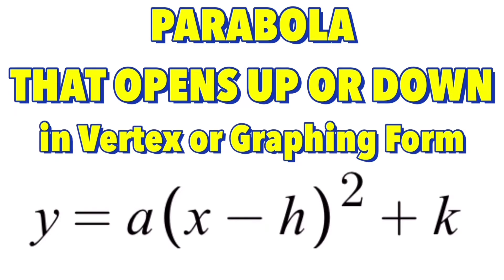We remember that the vertex form or graphing form of a parabola that opens up or down is given in an equation y equals a times the quantity x minus h squared plus k.